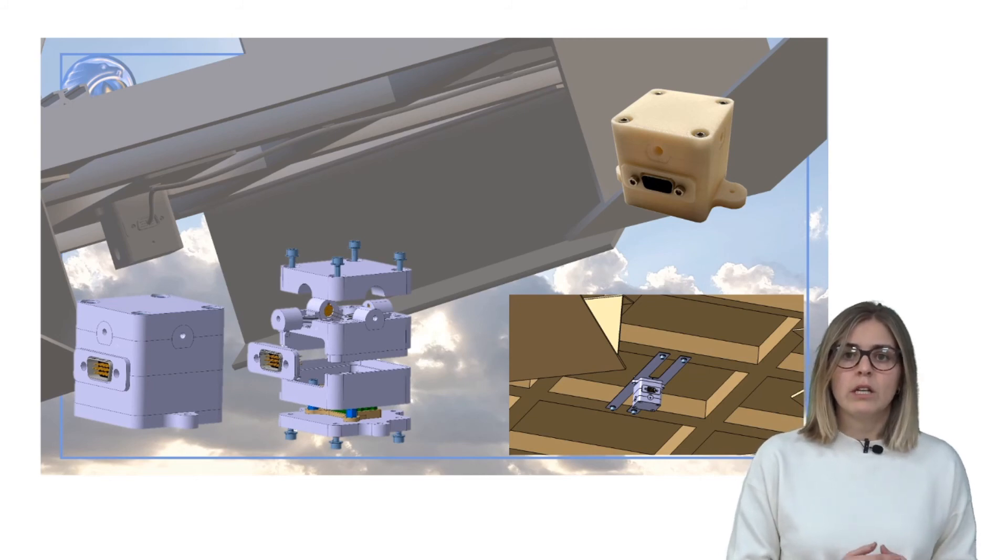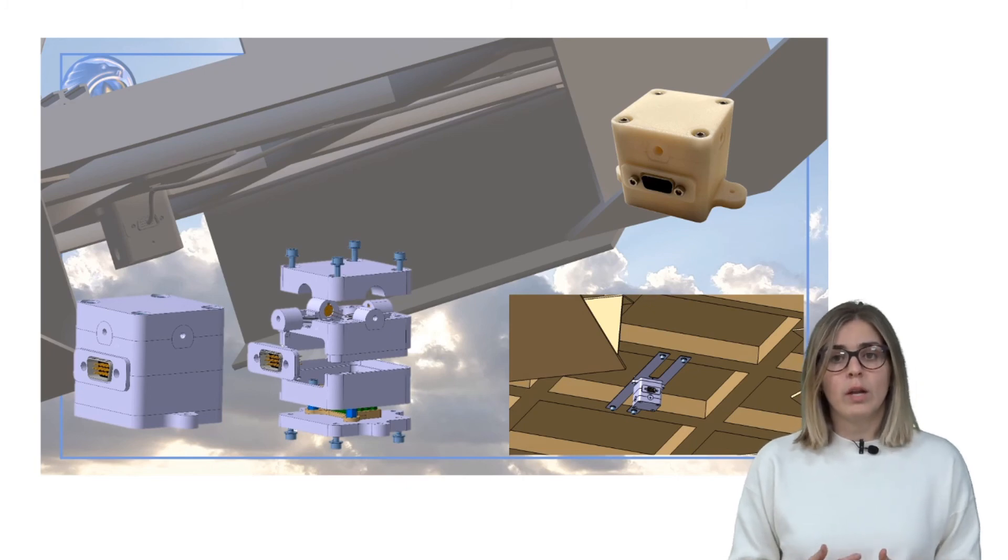The bottom section of the sensor is fixed with screws to an aluminum support plate that will be fixed to the gondola with rivets.